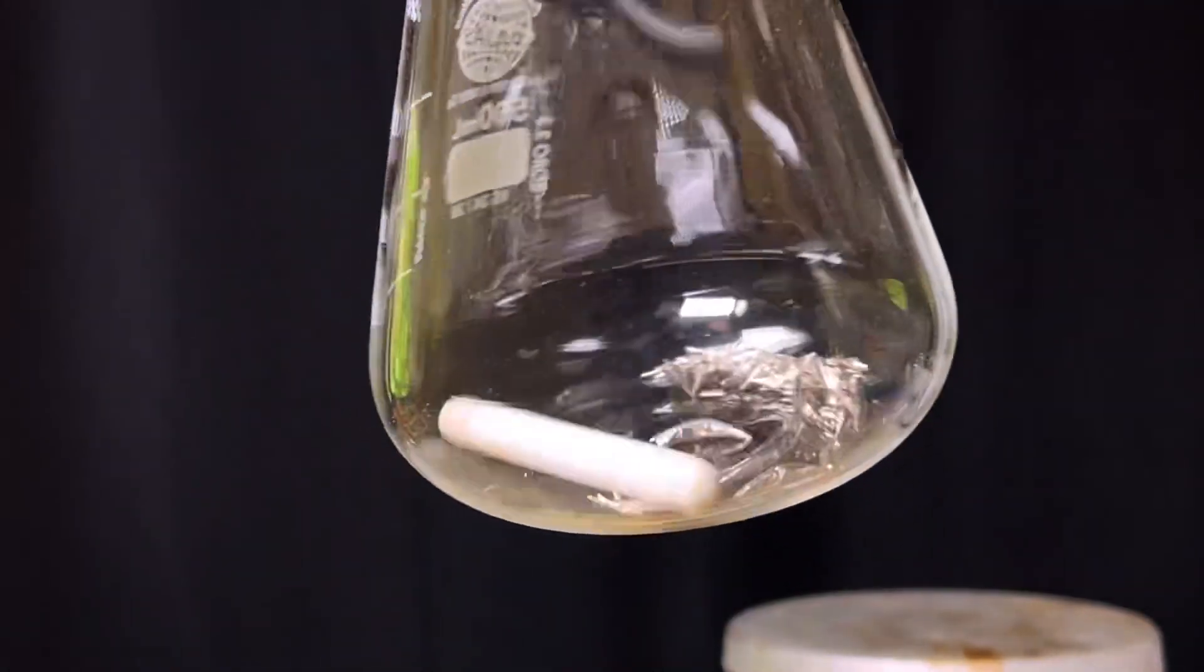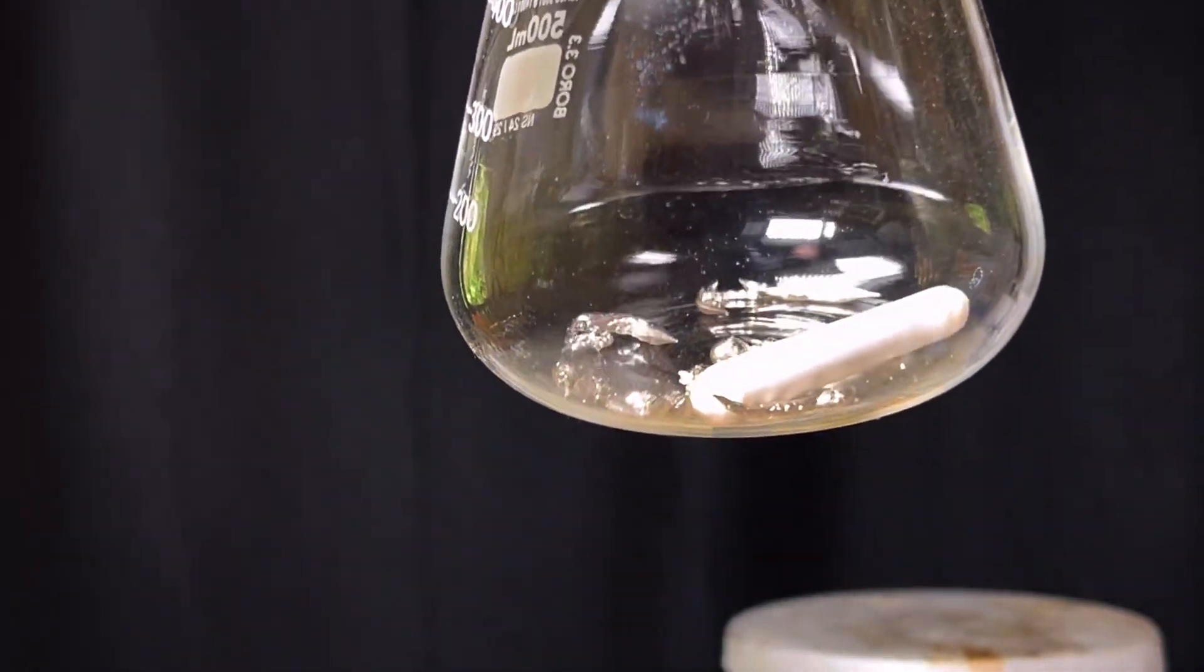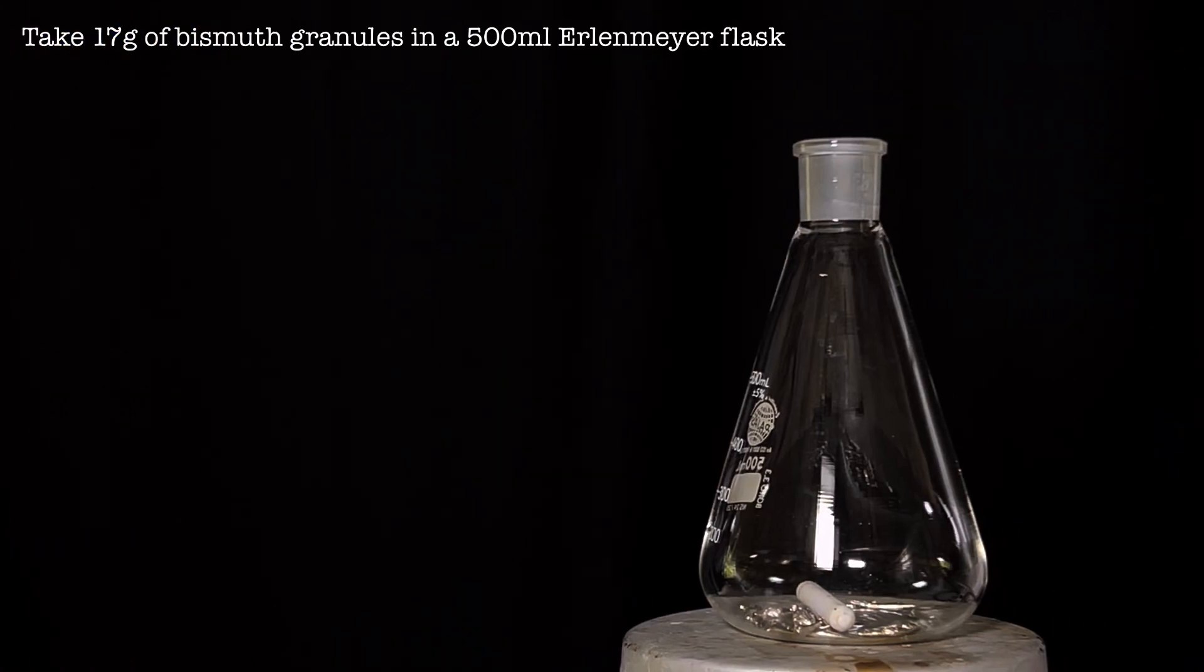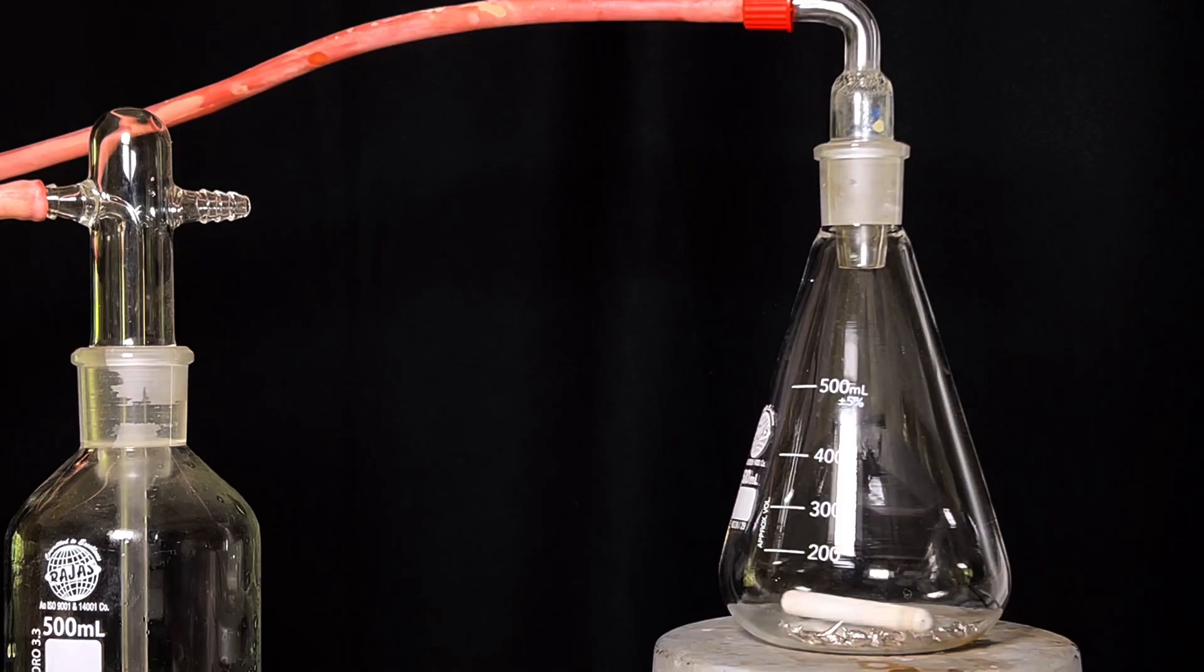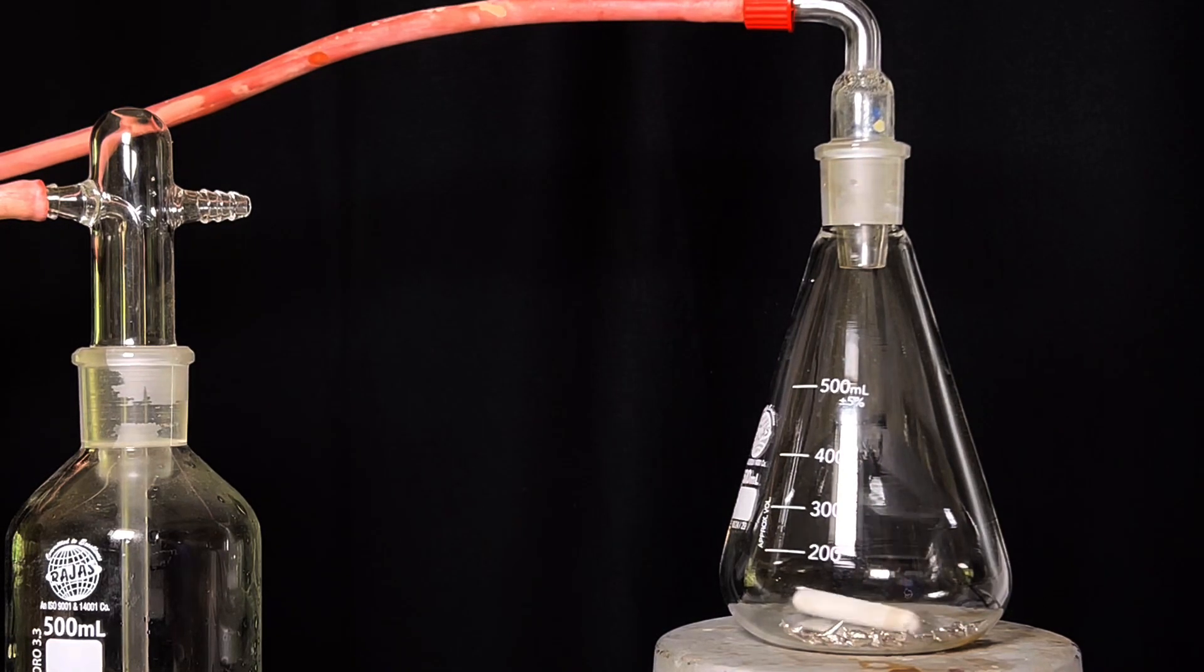Start by taking 17 grams of fresh bismuth metal in a 500 milliliter Erlenmeyer flask. A magnetic steering bar was also placed in the flask and the flask was placed in a hot plate stirrer. A rubber tubing was connected from the Erlenmeyer flask to a gas wash bottle. The gas wash bottle contains silica gel.